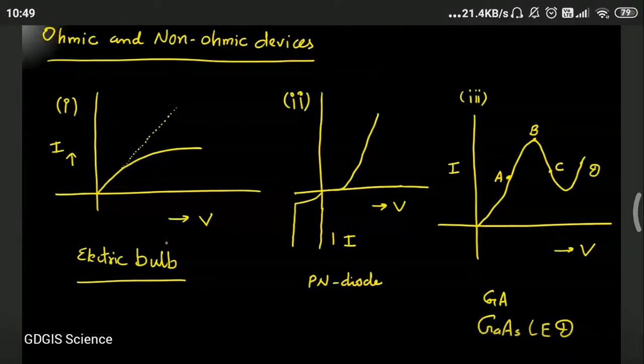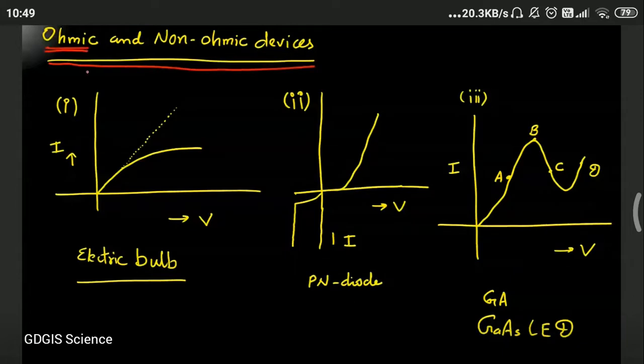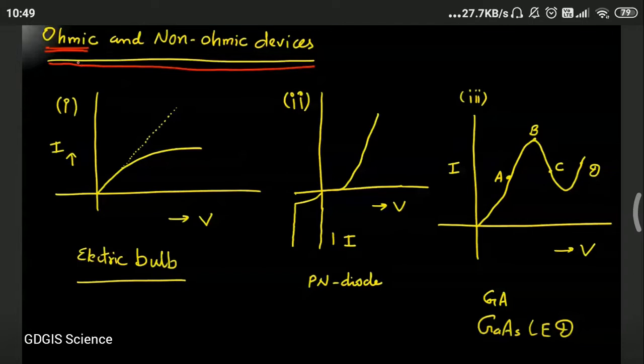So students, today we are going to deal with ohmic and non-ohmic devices. What are ohmic devices? Those devices which follow Ohm's law: I proportional to V. They are ohmic devices.